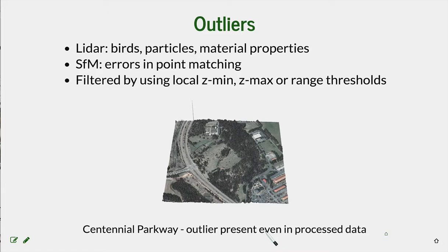Outliers are present in both LiDAR and structure from motion point clouds. They can be either below the surface or a couple hundred meters above the surface. They are usually quite easy to remove because they are very different from the rest of the point cloud, and are usually removed as the data are processed and geo-referenced. For example, in one cleaned-up point cloud there was still one point that was 600 meters above the surface. That can be very easily removed by using a threshold above the bare ground or some low-resolution digital elevation model.